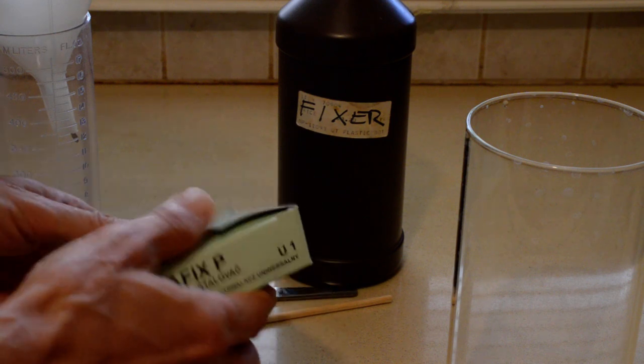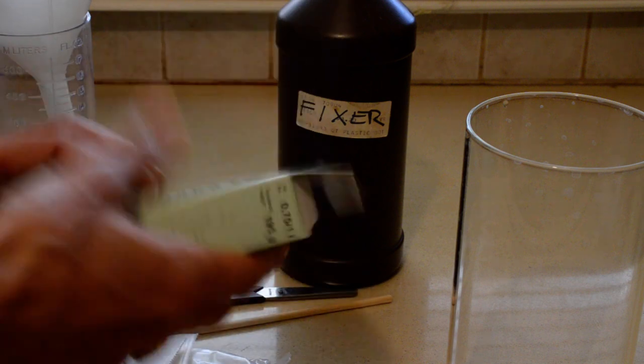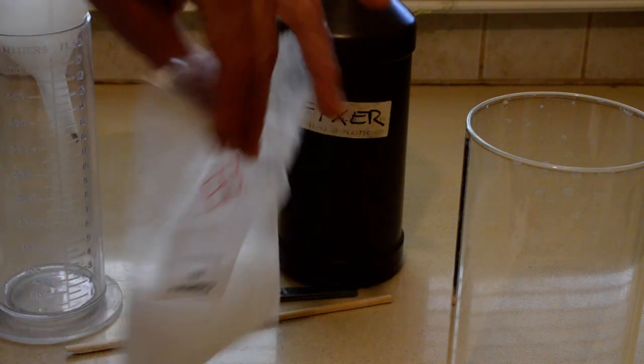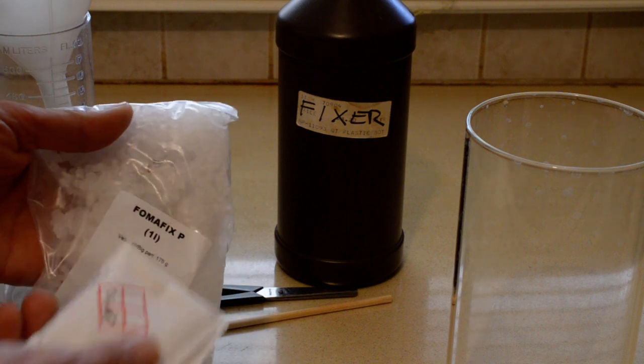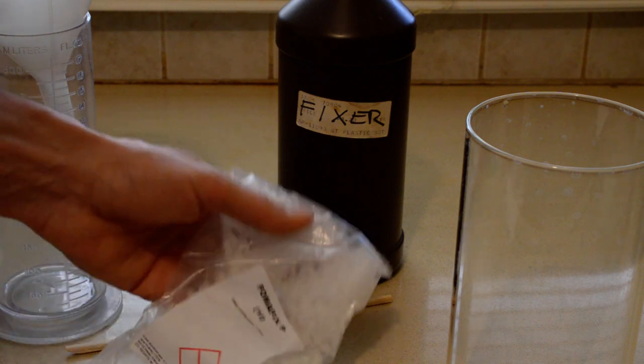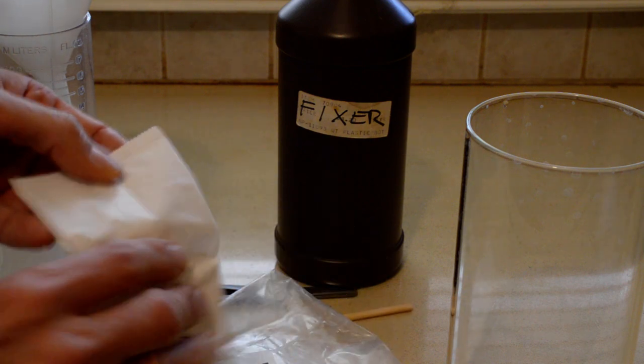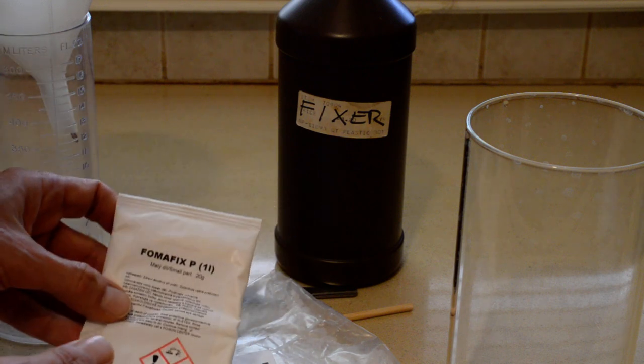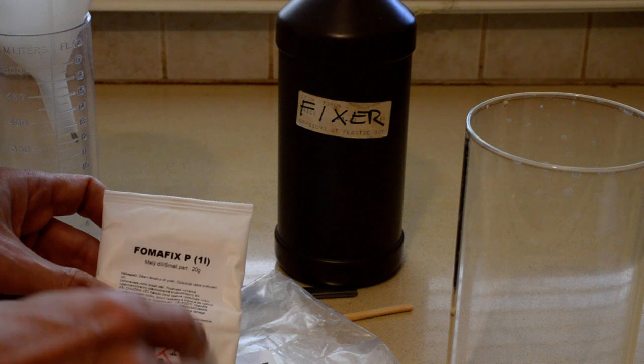Alright, so let's open up the box and see what we've got. Inside the box, we have one big envelope which is labeled Fomafix P, 1 liter. And we have another bag which is also labeled Fomafix P, 1 liter.